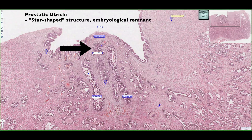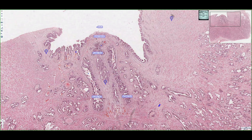The prostatic utricle is formed by an embryological remnant of the uterus and uterine tubes that are found in females, and in males it's a remnant that looks sort of like this star-shaped structure known as the prostatic utricle.